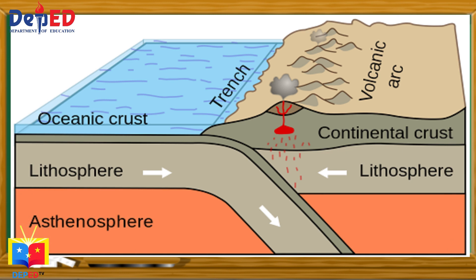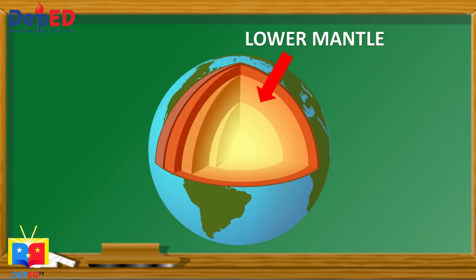The crust and the uppermost mantle make up a rigid outer layer called the lithosphere. Where the rocks become partially melted, they are able to flow slowly because of the uneven distribution of heat deep within the Earth — this region is called the asthenosphere. Beneath the asthenosphere, the rock becomes stronger again, and this region is called the lower mantle.